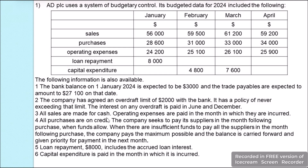All sales are made for cash. Operating expenses are paid in the month in which they are incurred. All purchases are on credit. The company seeks to pay its suppliers in the month following purchases when funds allow. When there are insufficient funds, the company pays the maximum possible and the balance is carried forward with priority for payment in the next month. The loan repayment of $8,000 includes accrued loan interest. Capital expenditure is paid in the month incurred.